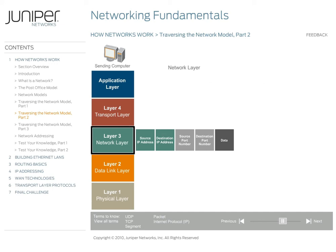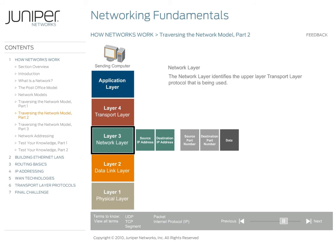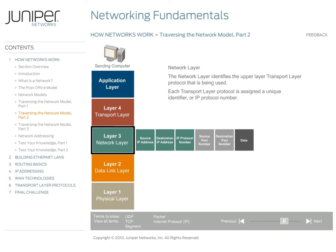The network layer treats the data it receives from the transport layer as one piece of data. It does not need to inspect the transport layer headers or the original data during the encapsulation process. As part of its own headers, the network layer adds a number identifying the upper layer transport layer protocol. Each transport layer protocol is assigned a unique identifier, or IP protocol number. For example, UDP is IP protocol number 17, and TCP is IP protocol number 6.